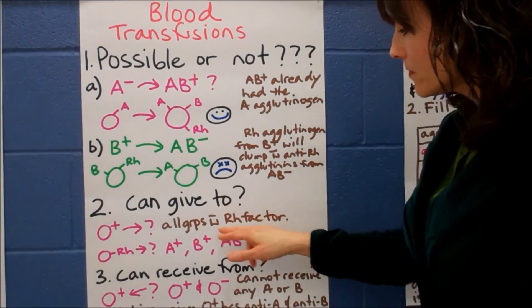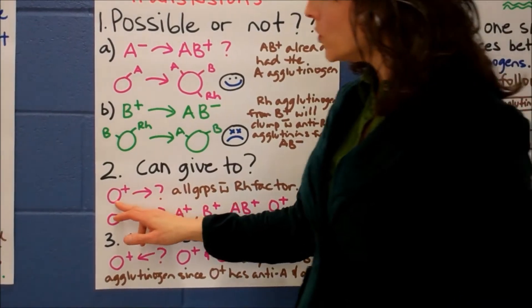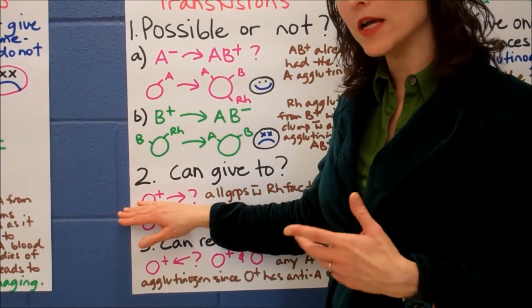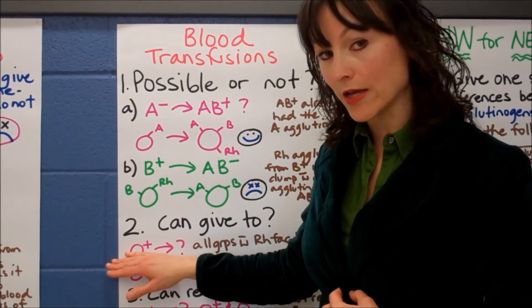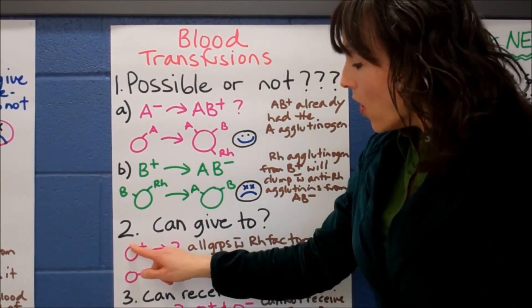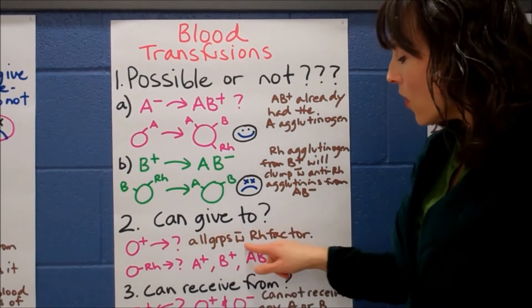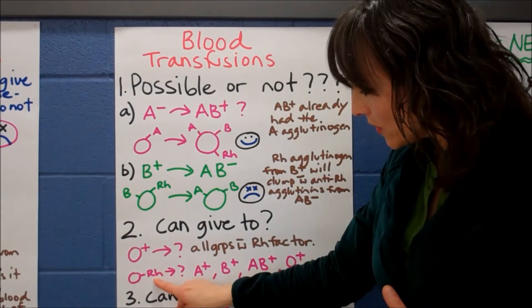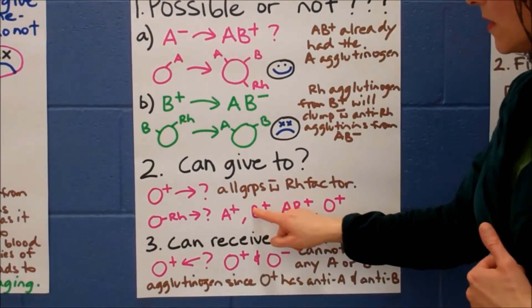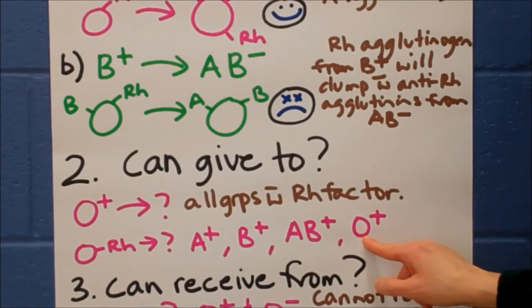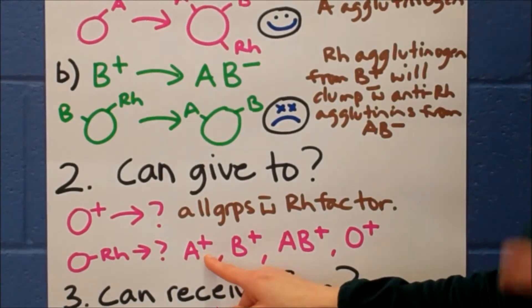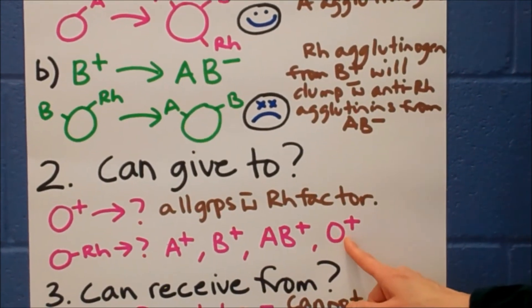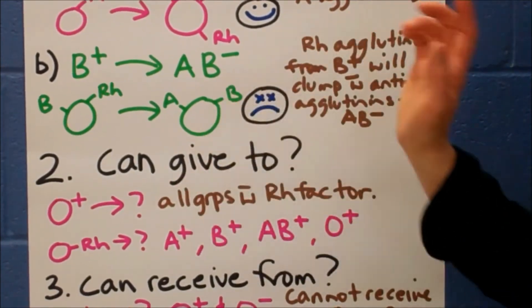Number two. Can give to. Who do you think AB plus can give to? Once again, you can pause the video and try this on your own before you see my answer. O plus can give to all positive blood types. Because O only has the RH on it. This is the picture. It can give to any positive blood types. Because it's giving RH to AB plus which has the RH. So does B plus. So does AB plus. So does O plus. So that's good. This is check.